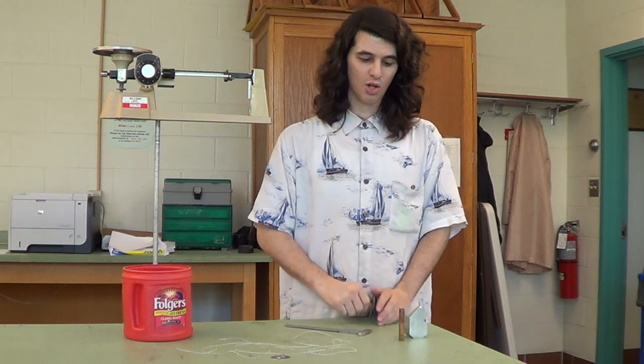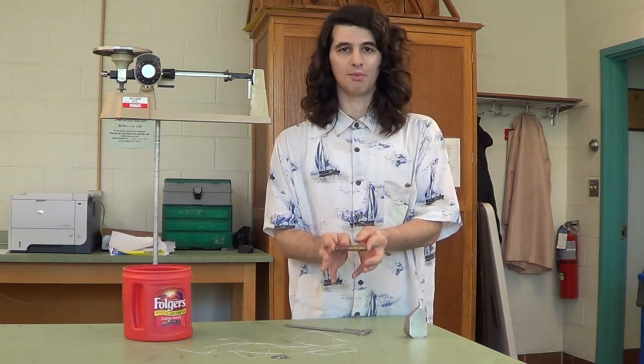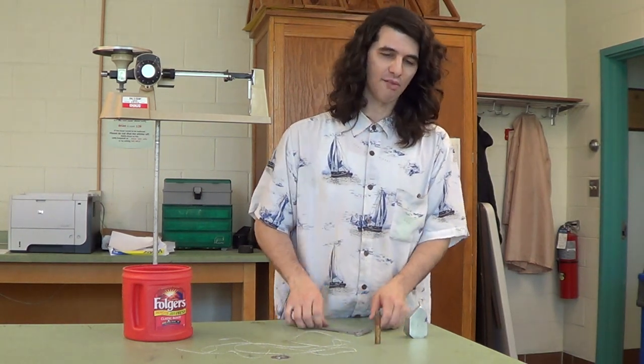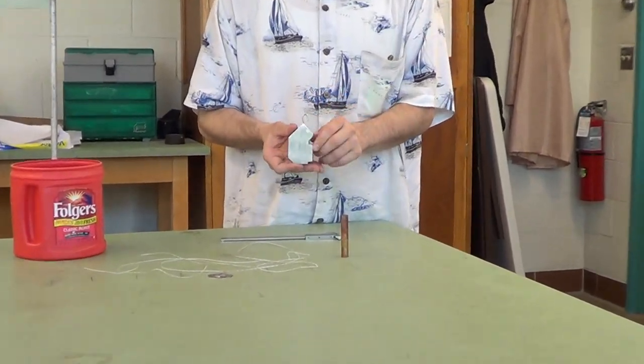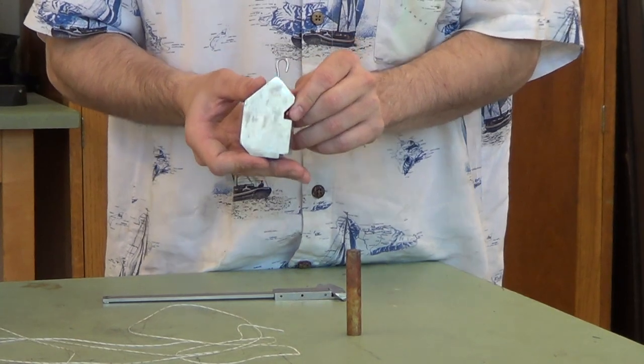For Archimedes' principle of density, we're going to be looking at two different samples, one of which is a regular object, which is easy to measure with a pair of calipers, and an irregular object, which isn't quite so easy. We have to find a different way to measure the volume of this one.